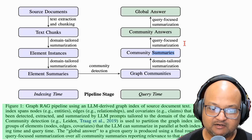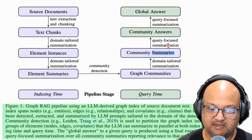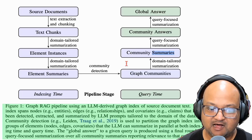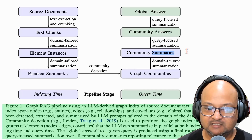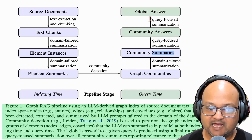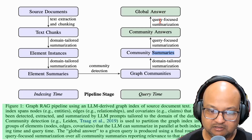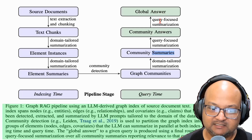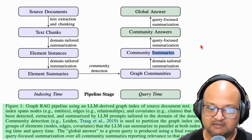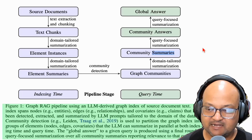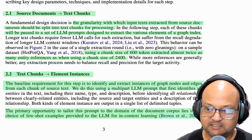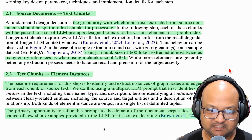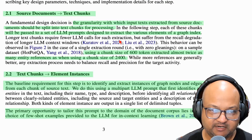At query time, you start by looking at this higher-level abstraction and use it to generate a global answer that looks at these ideas throughout the corpus. Let's look at each of these steps in a bit more detail.